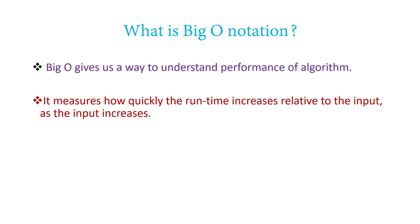So what is Big O notation? As we discussed, Big O notation helps us understand and compare the performance of algorithms. The definition: it measures how quickly the run time increases relative to the input. Just like earlier — I had 100 numbers and wanted to search for one, and now I have 1 billion numbers. As I increase the input size, Big O notation tells us how the run time is increasing.